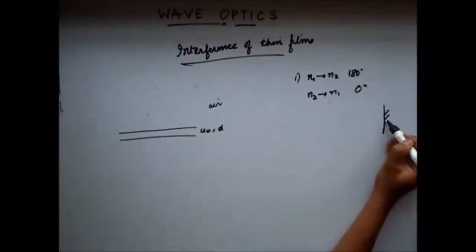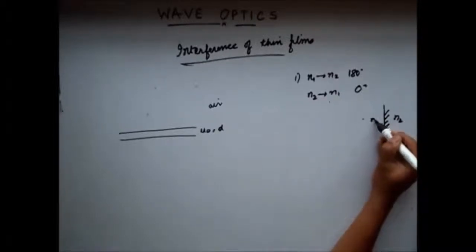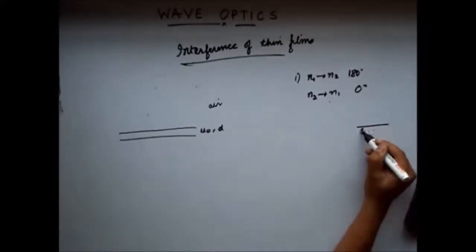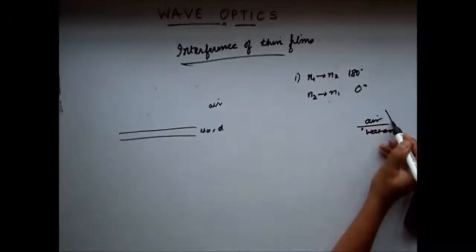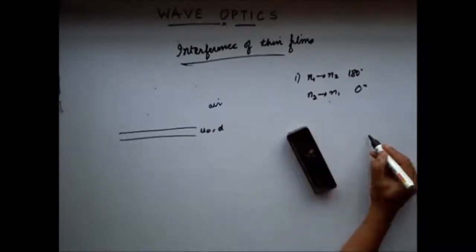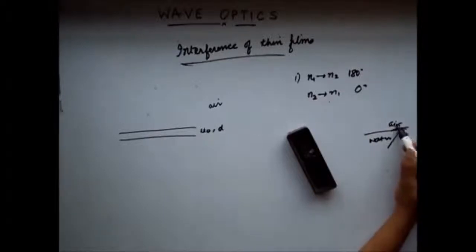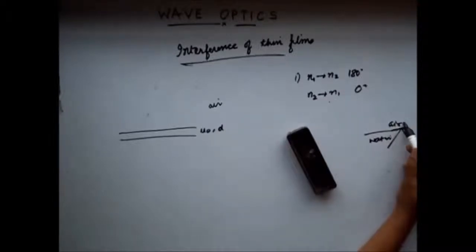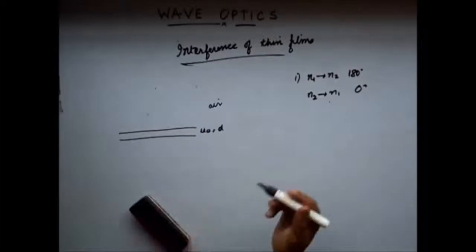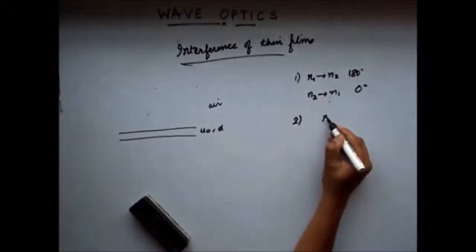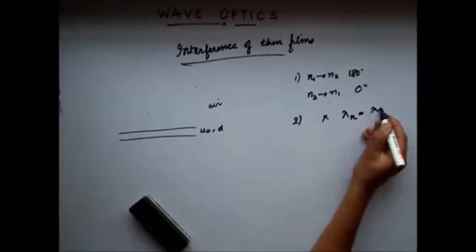If we have a mirror, this side is a denser medium, so there is a phase change of pi. Similarly, with water and air, if reflection occurs first at the denser medium, there is a phase change of pi. On the other hand, if light waves move from water to air and reflection occurs at that surface — since this is denser and this is rarer — there is no phase change of pi. The other concept is that if the wavelength of light in a vacuum is lambda, then the wavelength of light in a particular medium lambda_n is given by lambda divided by n.